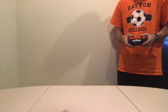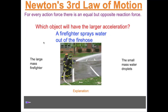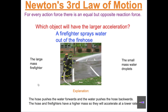The helicopter does accelerate upward quickly, but the air is accelerating downward faster. When firefighters spray water out of a hose, the hose pushes the water forward and the water pushes the hose backwards — and the firefighters are holding that hose. Which would have a larger acceleration: the large-mass firefighters or the small-mass water droplets? The larger the mass, the smaller the acceleration, so the hose and firefighters have a lower acceleration, while the water droplets have a higher acceleration.